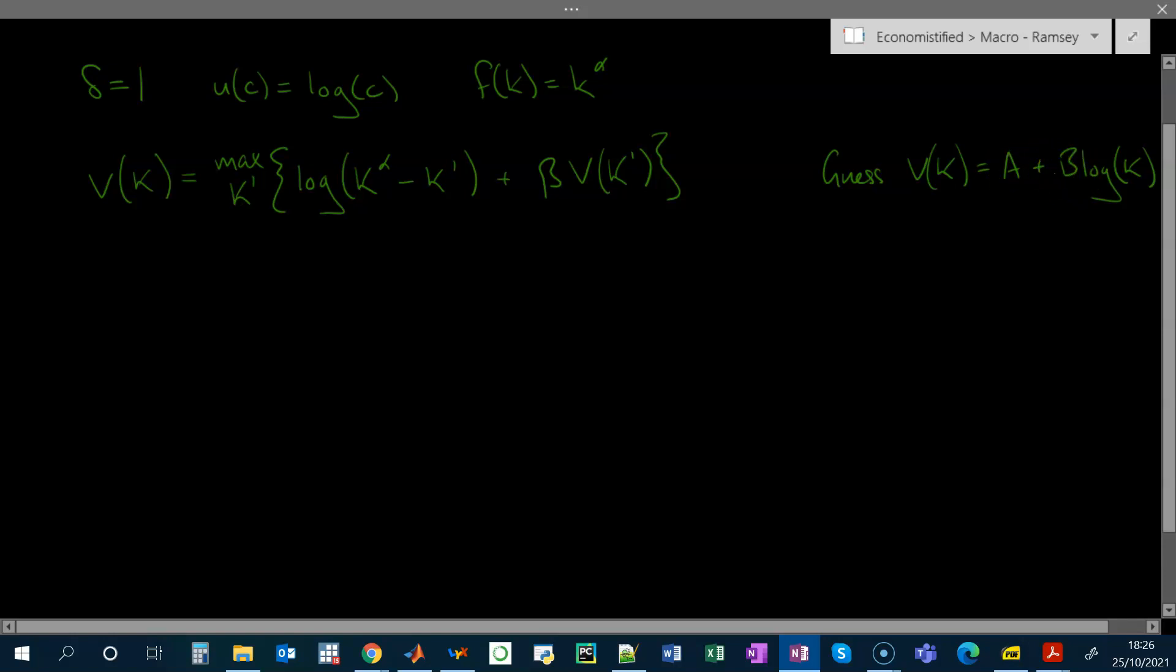This is sometimes called the method of undetermined coefficients, because these coefficients are as yet undetermined. So let's plug this in. On the left hand side we just have a plus b log k, and this is equal to... And now I plug in the guess on the right hand side, but of course instead of having a plus b log k, we have a plus b log k prime.